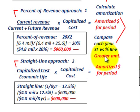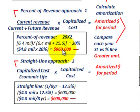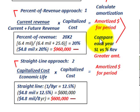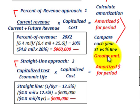We take the greater amount between those two methods. The percent of revenue approach was the greater amount, so that's the amount we'd be amortizing for the year — $960,000. Remember, we have to compare both approaches each year — straight-line versus percent of revenue — and take the greater amount each year using these formulas.